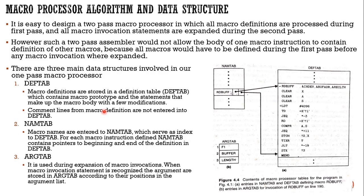However, such a two-pass assembler would not allow the body of one macro instruction to contain the definition of other macros, because all macros would have to be defined during the first pass before any macro invocations were expanded. Handling nested macros would require more than two passes, but here in the case of the macro processor we need only one pass — a one-pass macro processor.